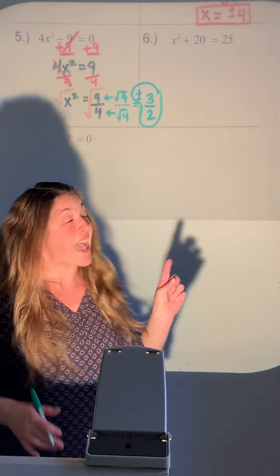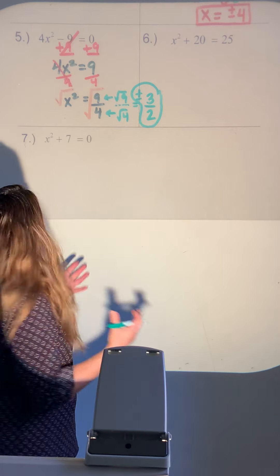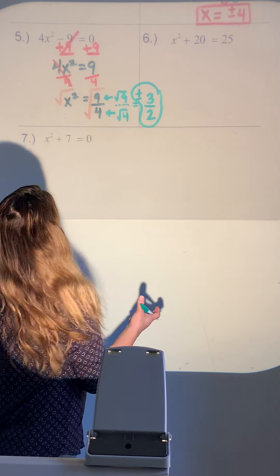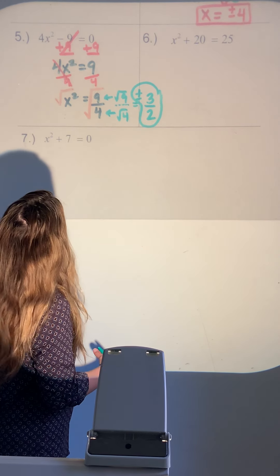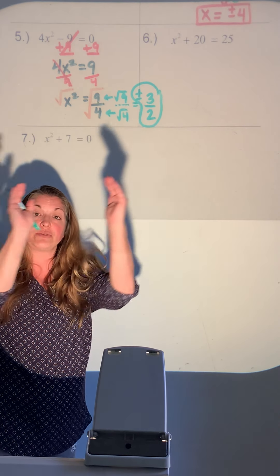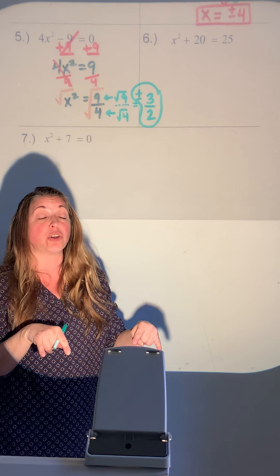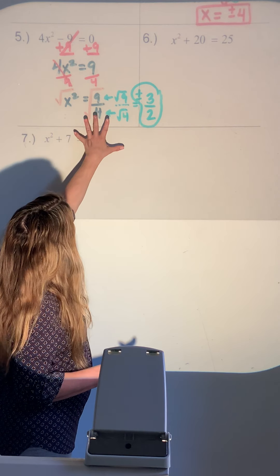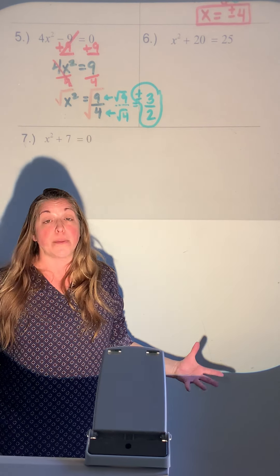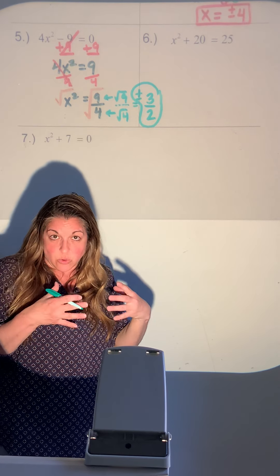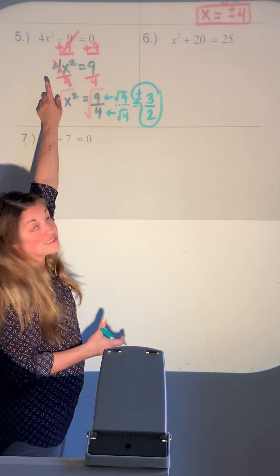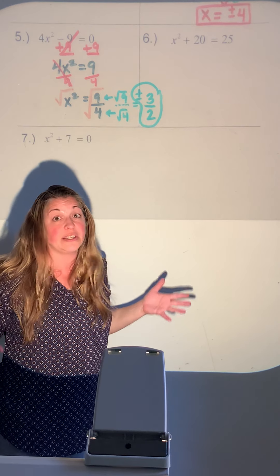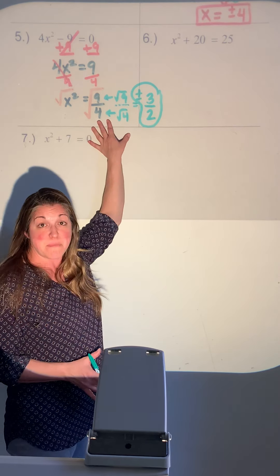This problem was actually on our first section of notes. It had two terms, no GCF — we recognized it as a difference of perfect squares. When we factored, we got (2x plus 3)(2x minus 3), which both solved down to positive 3 halves and negative 3 halves. So this is just an alternative method.